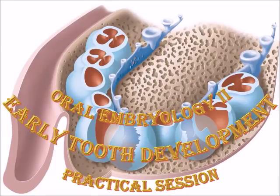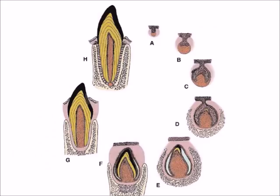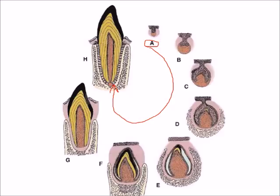Good morning students. Today we will continue talking about embryology — oral embryology and early tooth development. The stages of tooth development can be divided into physiological stages or morphological stages. The physiological stages include initiation, proliferation, histo-differentiation, morpho-differentiation, and apposition. The morphological stages we will study are the dental lamina, bud stage, cap stage, bell stage early and advanced, leading to a fully formed tooth.